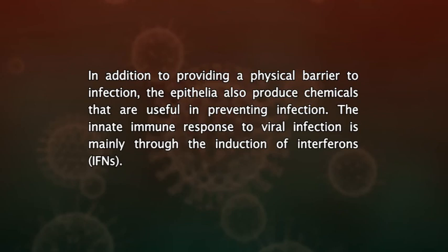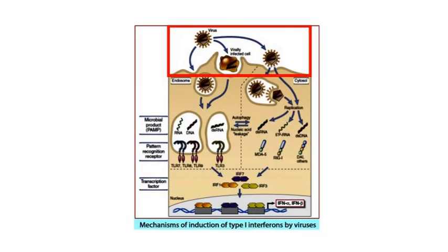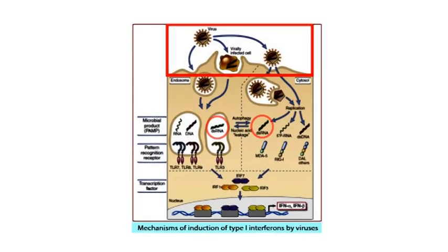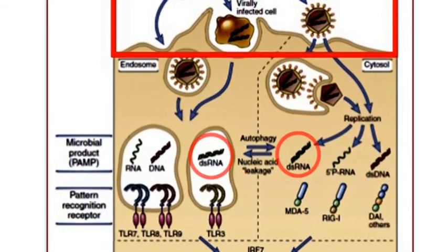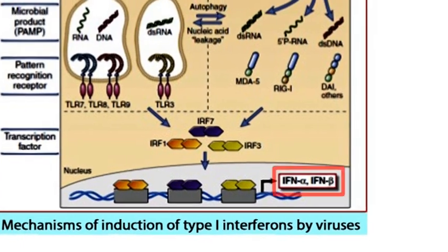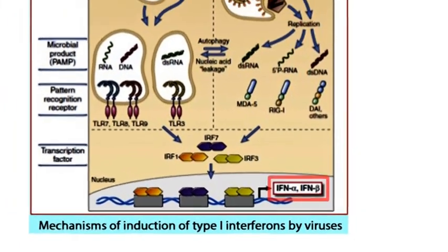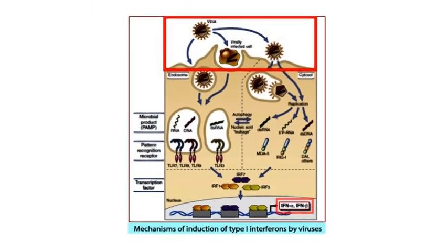The innate immune response to viral infection is mainly through the induction of interferons. Interferons can prevent viral replication by inducing an antiviral response. Virus-infected cells have double-stranded RNAs which are produced during the viral life cycle. These double-stranded RNAs can induce production of interferon alpha and interferon beta, which activates natural killer cells or NK cells.